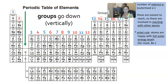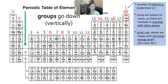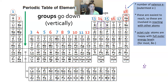Groups go down vertically — those columns tell us the number of electrons in the outermost shell. Let's use carbon as an example. Carbon has an atomic number of six, so it has six protons. Its atomic mass is 12, and since protons are six, neutrons must also be six. So I'm drawing six protons and six neutrons in the nucleus.